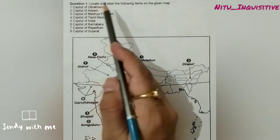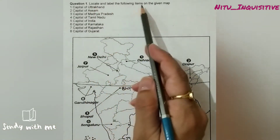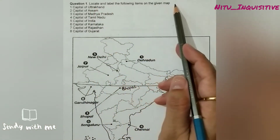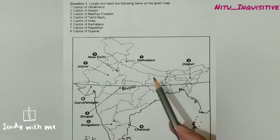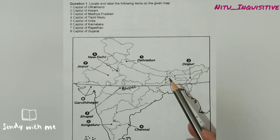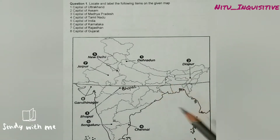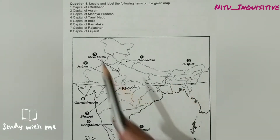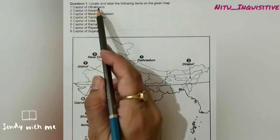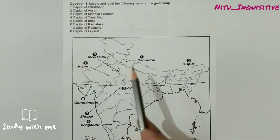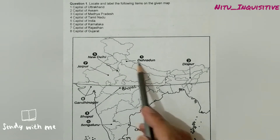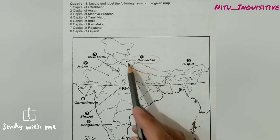The first question is: locate and label the following items on a given map. In this question, you are supposed to answer some state capitals. The first question is the capital of Uttarakhand. So this is Uttarakhand — the capital of Uttarakhand is Dehradun.